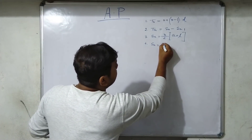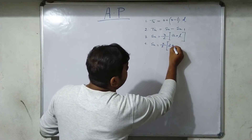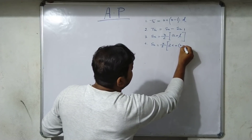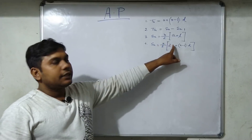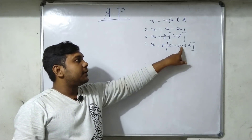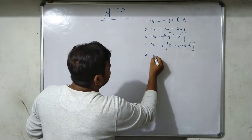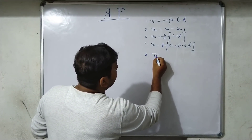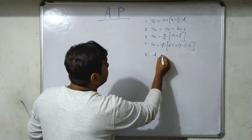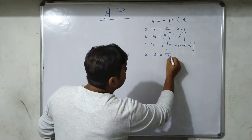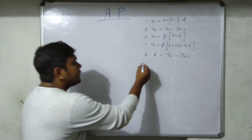Formula 4: Sₙ = N/2 × [2A + (N - 1) × D], where N is the number of terms, A is the first term, and D is the common difference. Formula 5: the common difference D = Tₙ minus Tₙ₋₁.